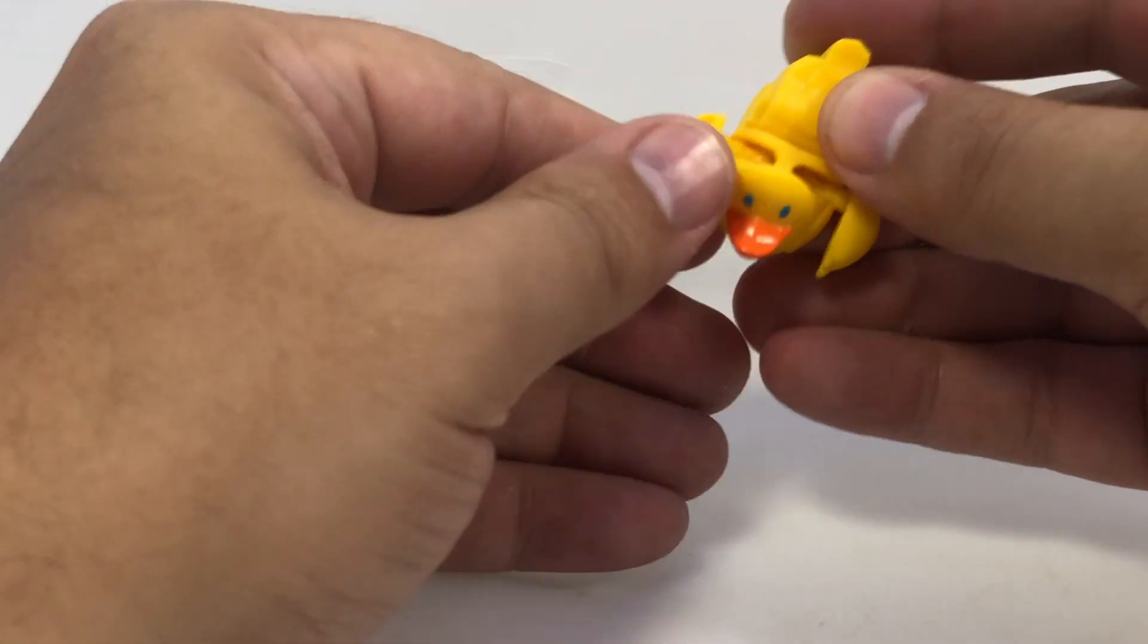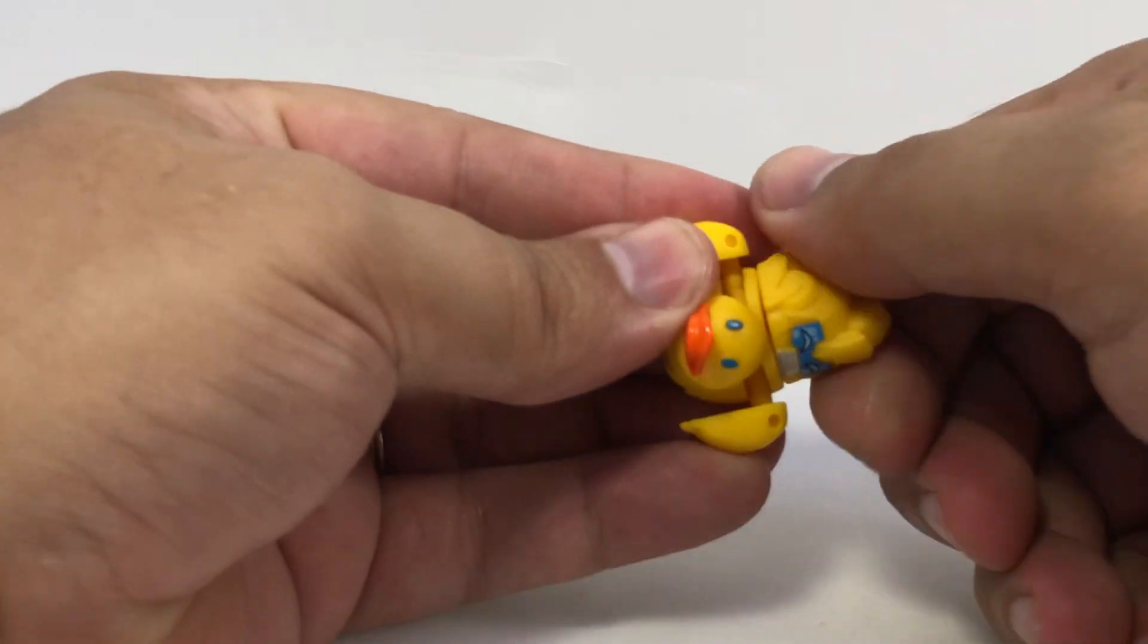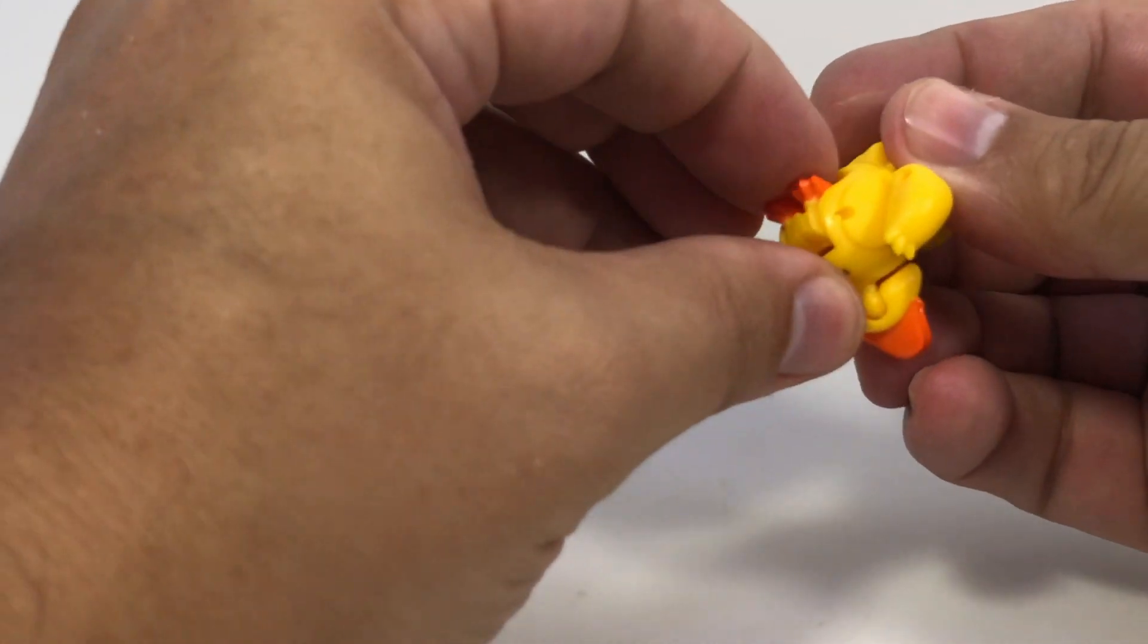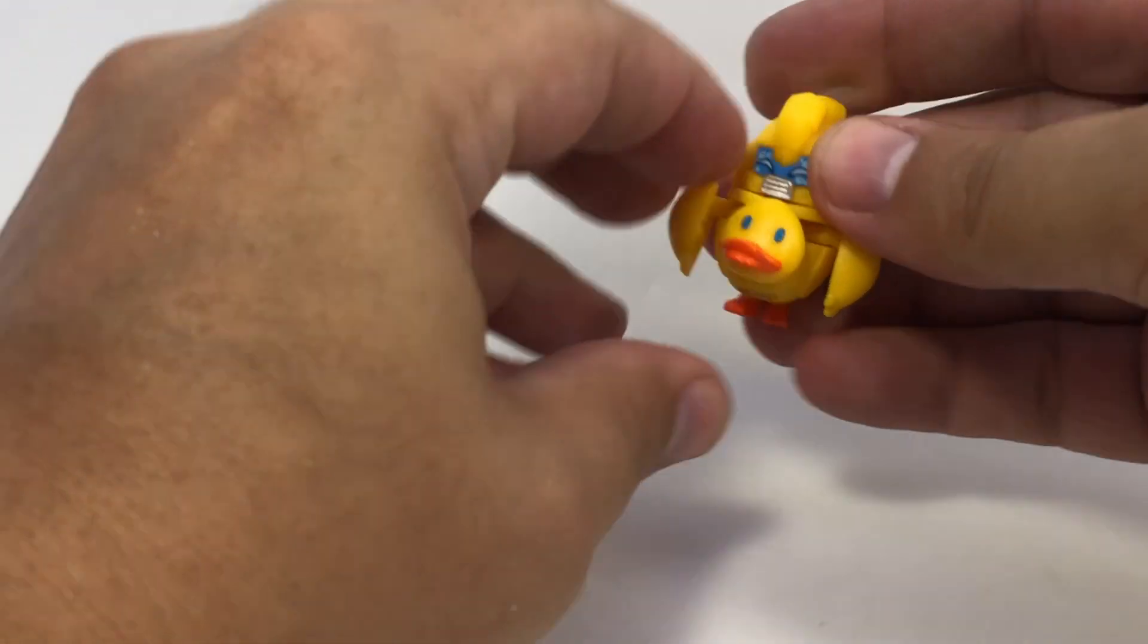So, fold his arms down. Fold his ducky face up. Turn his robot head around. He's got a duck face chest. Flip down his ducky feet. And there he is.